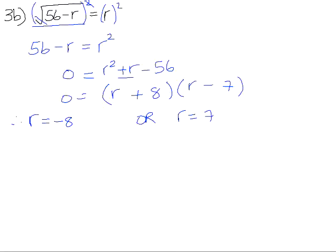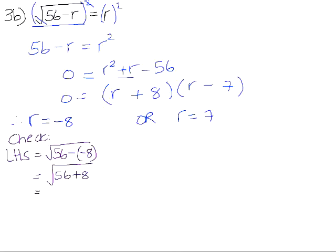Whenever you solve an equation by squaring, you need to do a check to make sure that your answers are valid. The left-hand side in the original equation was equal to the square root of 56 minus r. So we are going to substitute the value for r as negative 8. The square root of 56 minus negative 8 is 56, square root of 56 plus 8, which is the square root of 64, which is just 8.